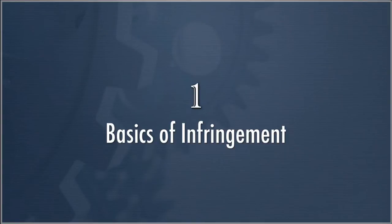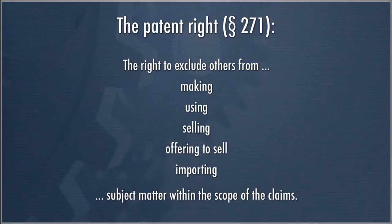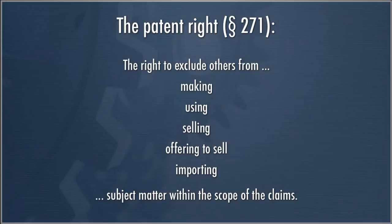Let's start with the basics of infringement. Section 271 of Title 35 defines the basic patent right and therefore patent infringement. It is a right to exclude others from making, using, selling, offering to sell, or importing subject matter that falls within the scope of the claims. Whatever the claim is construed as, the subject matter that falls within that is the right of the patent owner to exclude others from that scope.